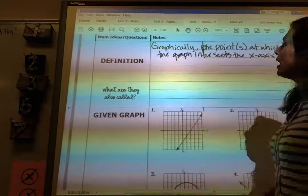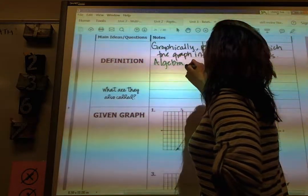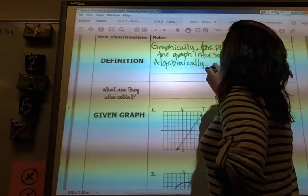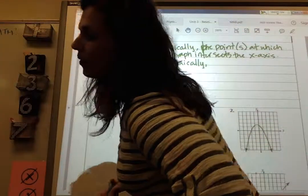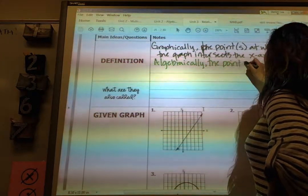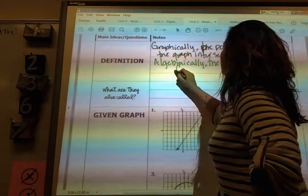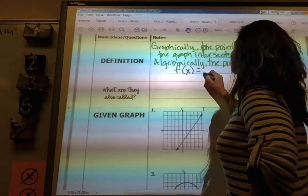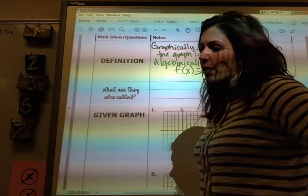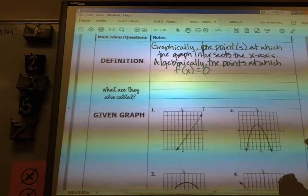Okay, we're going to talk about what that looks like. And then algebraically, it is the points at which f of x equals zero. Okay, all right. And then we're going to, of course, talk about what that means, too, in our notes.